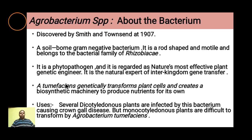Agrobacterium tumefaciens generally transforms a plant cell and creates a biosynthetic machinery to produce nutrients for its own use. Several dicotyledonous plants are infected by this bacterium, causing crown gall disease. However, monocots are difficult to transform by Agrobacterium tumefaciens.